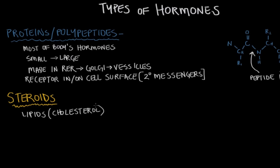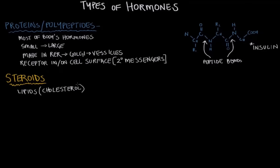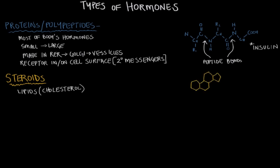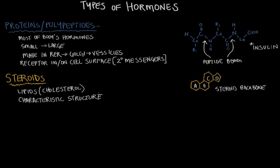Because they come from cholesterol, steroids have a really characteristic structure that all of them share. There are four ring structures — three cyclohexane rings, or six-membered carbon rings, and one cyclopentane ring, labeled A, B, C, and D. Unlike proteins and polypeptides whose receptors are on the cell surface, steroids — because they're made of lipids — have an easy time passing through the cell membrane, and their receptors are located inside the cell.